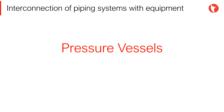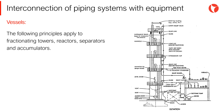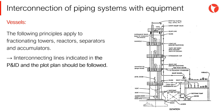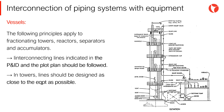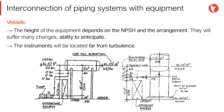The arrangement of piping in pressure vessels is one of the simplest cases, with the exception of fractionating towers. The following principles apply to fractionating towers, reactors, separators, and accumulators. Interconnecting lines indicated in the P&ID and in the plot plan should be followed. In towers, lines should be designed as close to the equipment as possible, and supported on the equipment if possible. The height of the equipment depends on the NPSH of the pump and the piping arrangement. This arrangement will suffer many changes, so the designer should be able to anticipate all these changes.